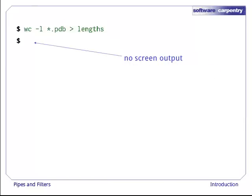Notice that there is no screen output. Everything that wc would have printed has gone into the file lengths instead.